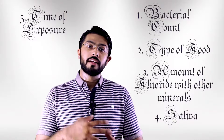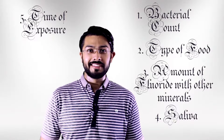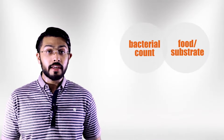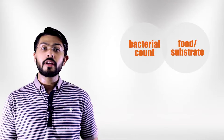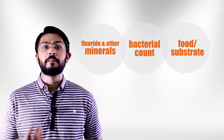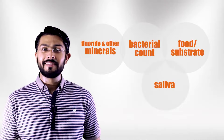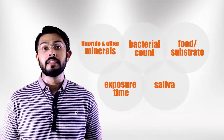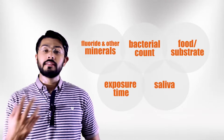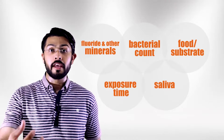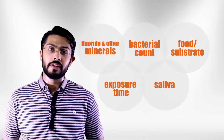We're done with the five factors responsible for causing dental caries. Dental caries is a multifactorial disease. Let's revise them quickly: the first is bacterial count, the second is the food we eat, the third is the minerals present in the tooth, the fourth is saliva, and the fifth is exposure time. It's a balance of all these factors that needs to be maintained to prevent dental caries. Now you know what to do to prevent dental caries. The takeaway message: resisting chocolates is not easy, but you've got to do that for your teeth.